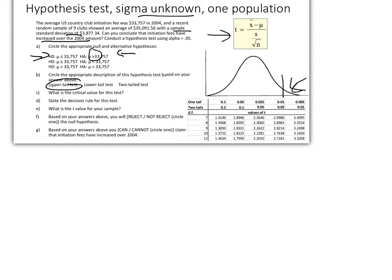What is the critical value for this test? Let's look here. We've got an alpha of 0.05. We have an upper-tail, one-tail test. Alpha of 0.05 is right here. And our degrees of freedom, we sampled 9, degrees of freedom then is 8. So our critical value then is 1.8595, right here. So t of alpha equals 1.8595.